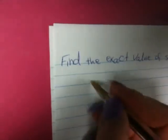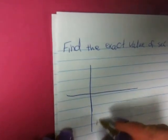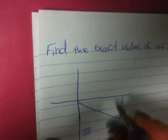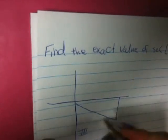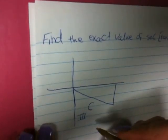Hi everyone, today we will find the exact value of secant tangent inverse of negative 9 over 2. First, we will draw our triangle. It's in quadrant three.